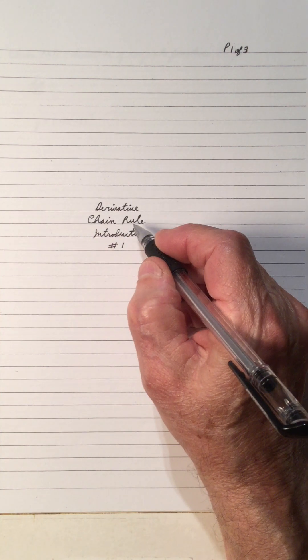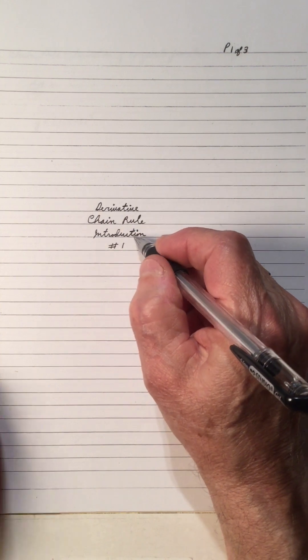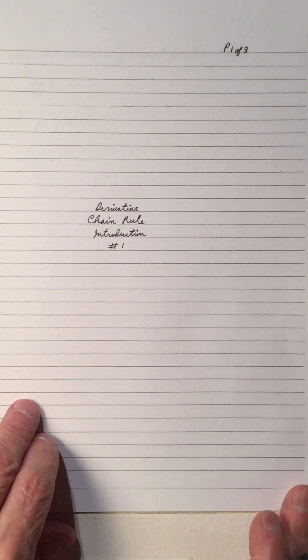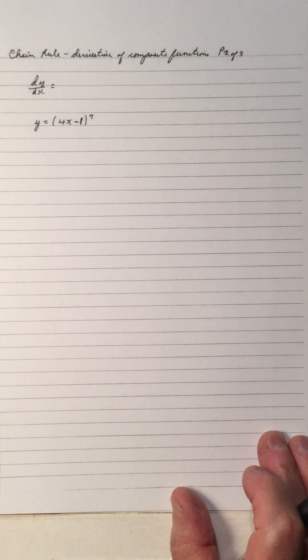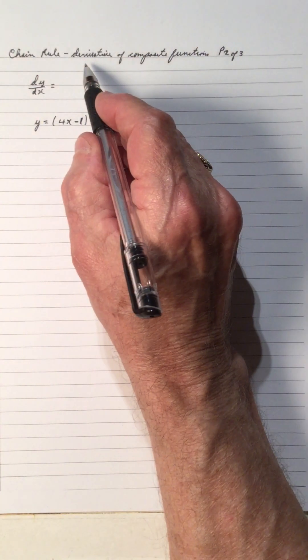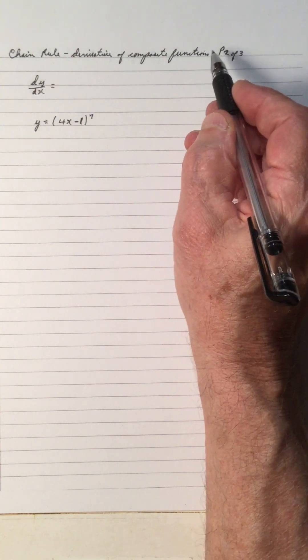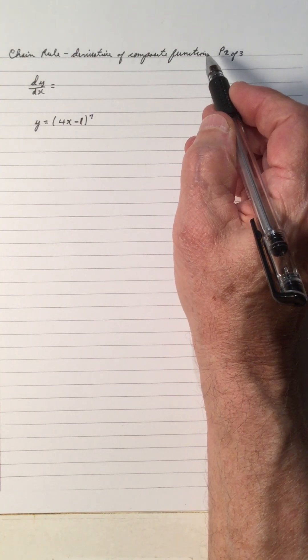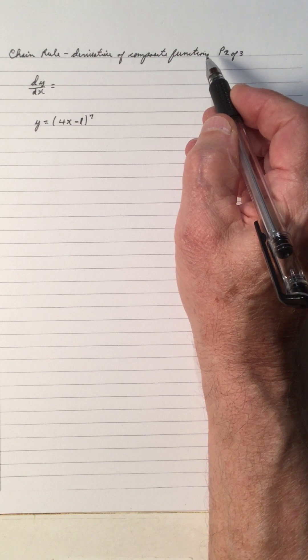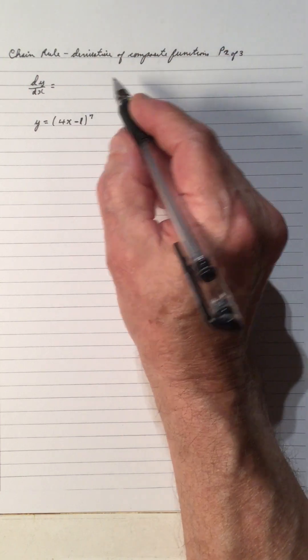Hi, welcome to my video on the chain rule. This is a new unit — I'm doing the derivative using the chain rule. This first video is an introduction, number one. The chain rule is the derivative of composite functions, and we'll see that as we do more videos.